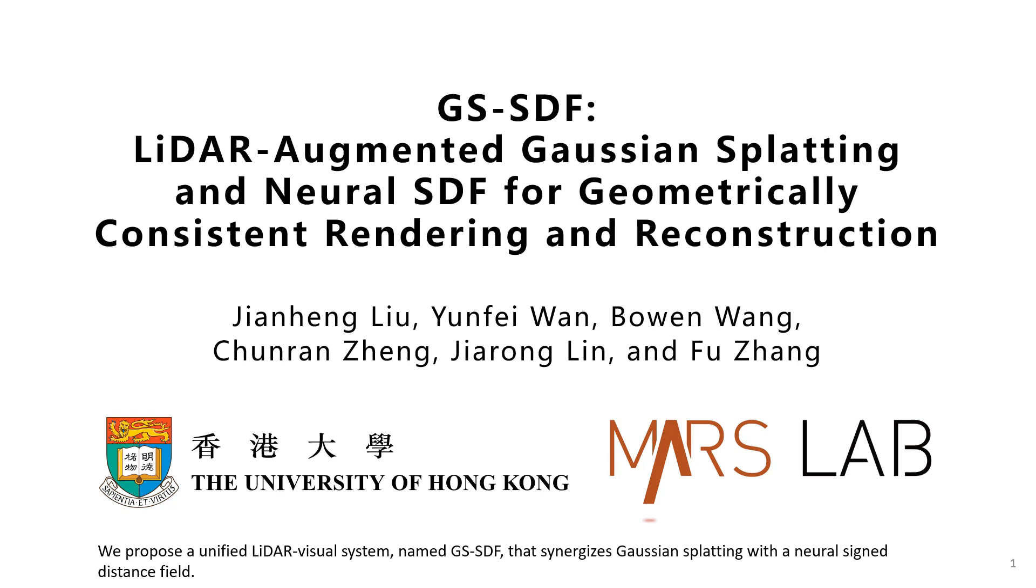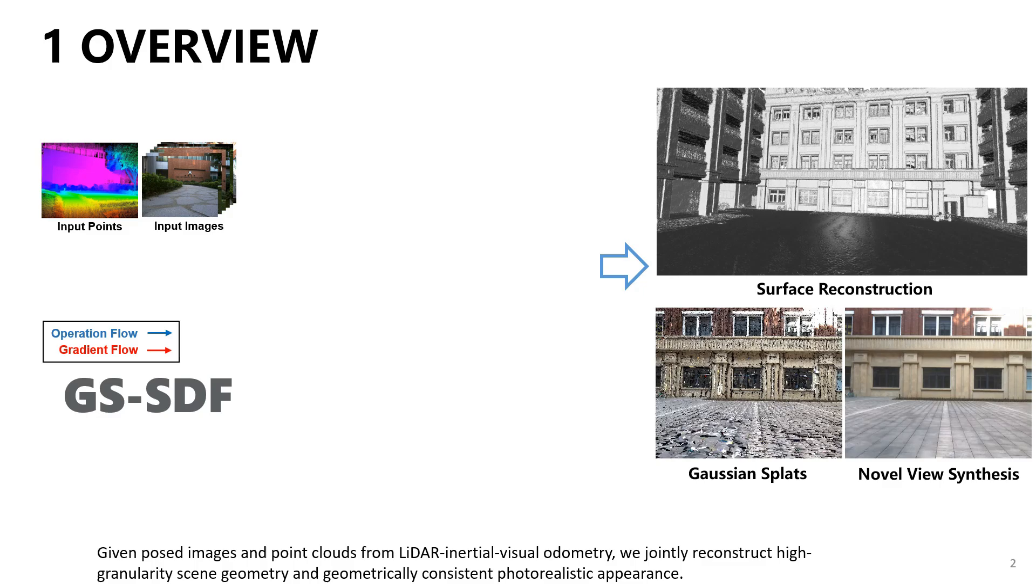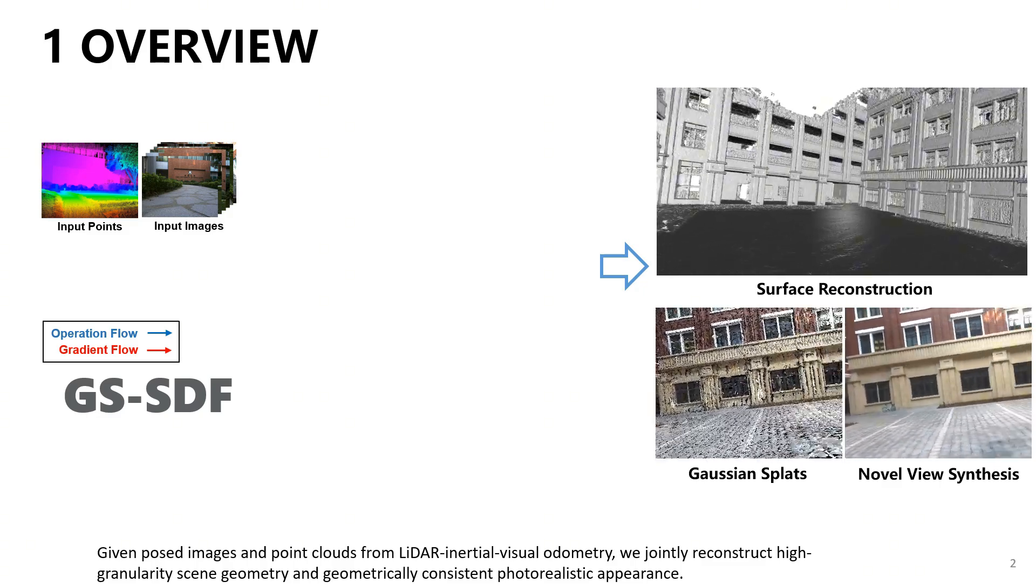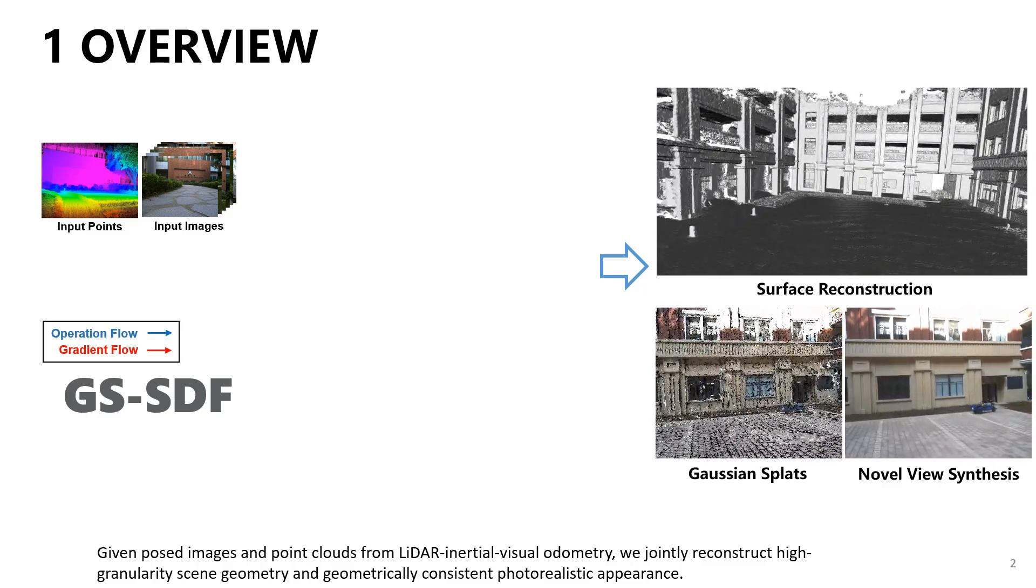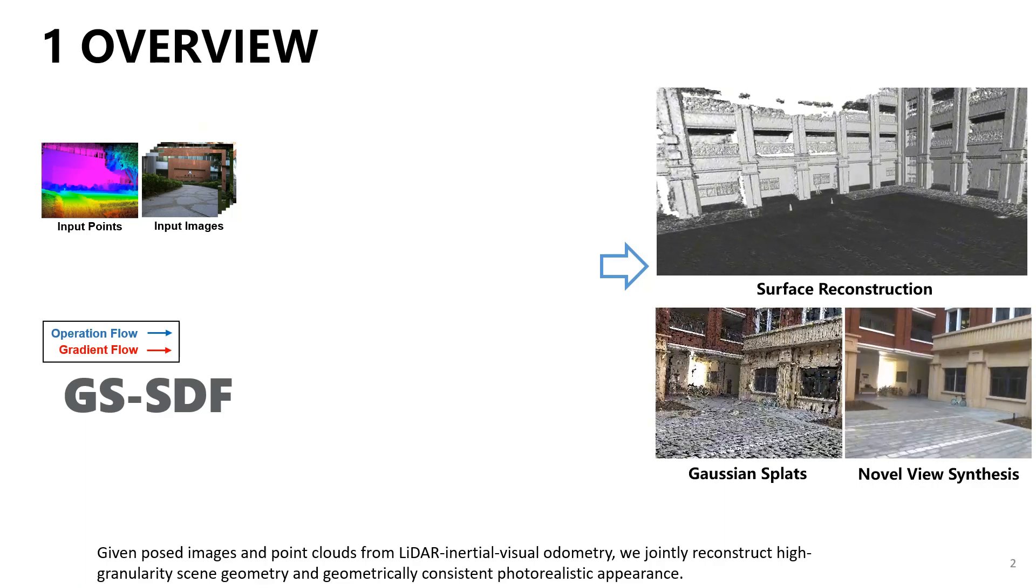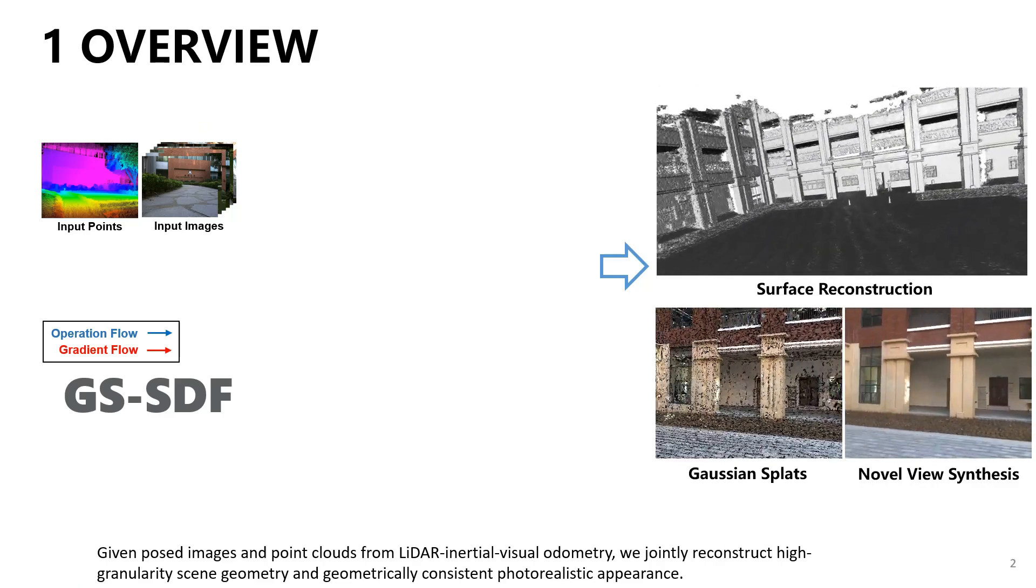We propose a unified LiDAR visual system, named GS-SDF, that synergizes Gaussian splatting with a neural signed distance field. Given pose images and point clouds from LiDAR inertial visual odometry, we jointly reconstruct high granularity scene geometry and geometrically consistent photorealistic appearance.